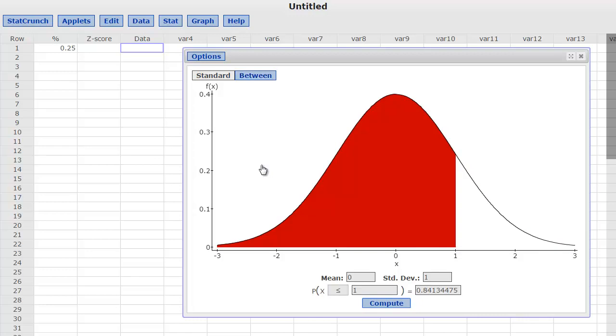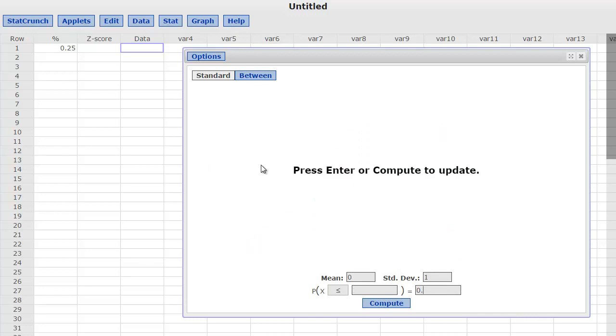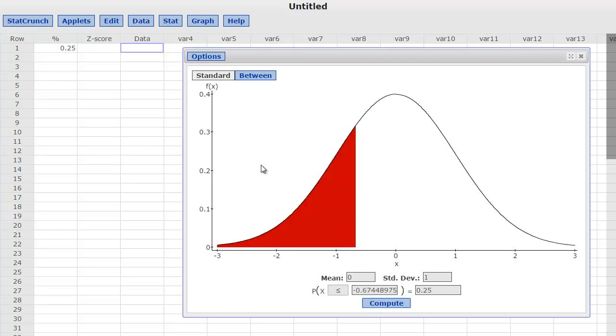Now what's also cool is instead of plugging in a data value, you can plug in the percentage. And so what I'm going to do is find out what the lowest 25% is. Now how do I know that this is the lowest 25%? Well, this is less than and it's shaded to the left. So these are the less than. And so the z-score that I get, the cutoff value is this negative 0.6745. And I'm going to round it to four decimal places. That's a common practice, especially for MyStatLab.